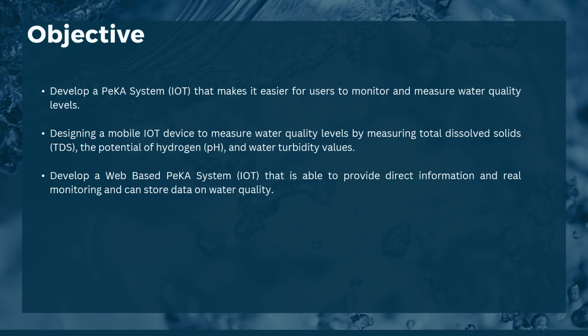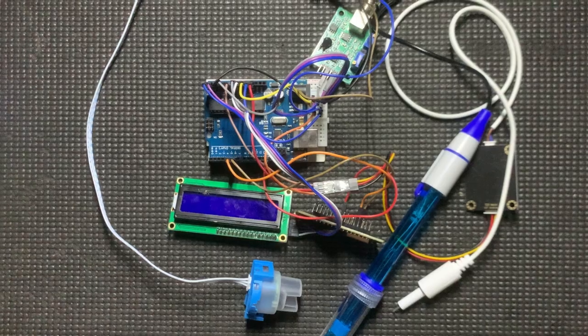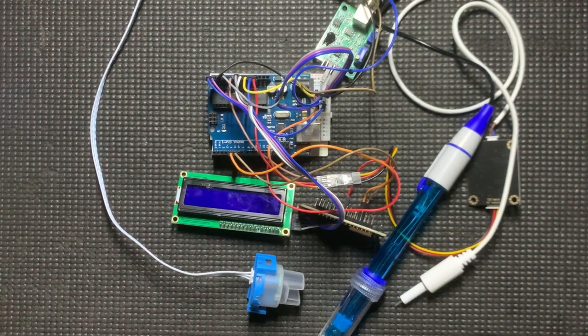Third, development of a web-based PeKA IoT system that is able to provide direct information and real-time monitoring of water quality levels, and can store data on water quality. The scope of the system includes an admin, who is the water research project leader, and a user, who is the water researcher.